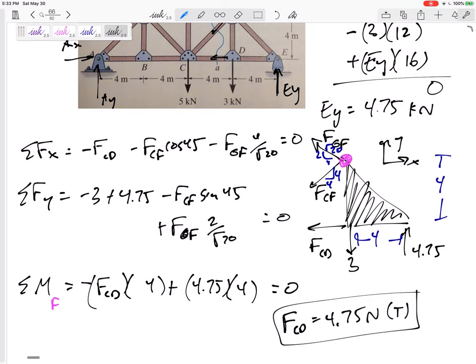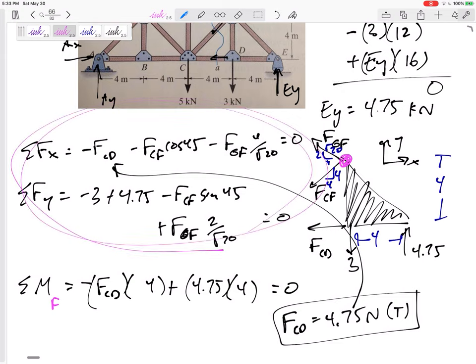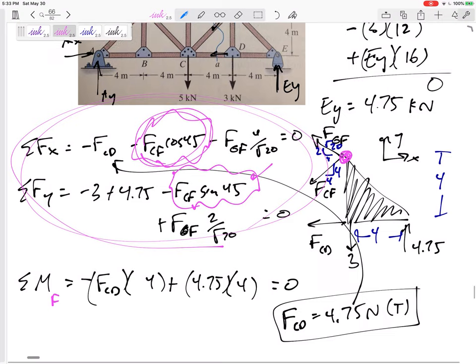And then if I plug this back in up here, it won't be easy, but once I plug that back, then I have two equations, two unknowns. And then also I see a little shortcut in that FCF sine 45 and FCF cosine 45 are equal to each other. So I would probably write this is equal to FGF plus other terms, plug that in right here and solve for FGF.